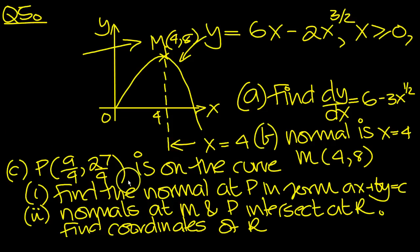So I've summarized the question all here. Let's look at the first point. When P is on the curve, this point here, 9 over 4 and 27 over 4 coordinate is on the curve.